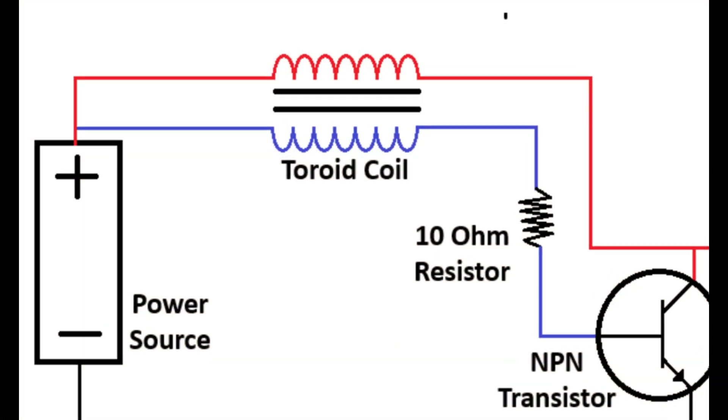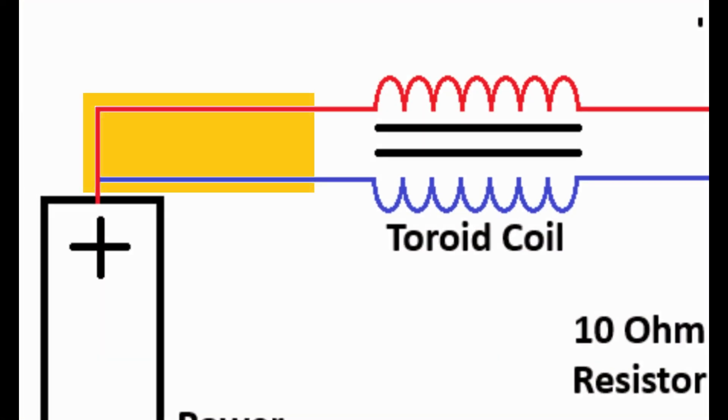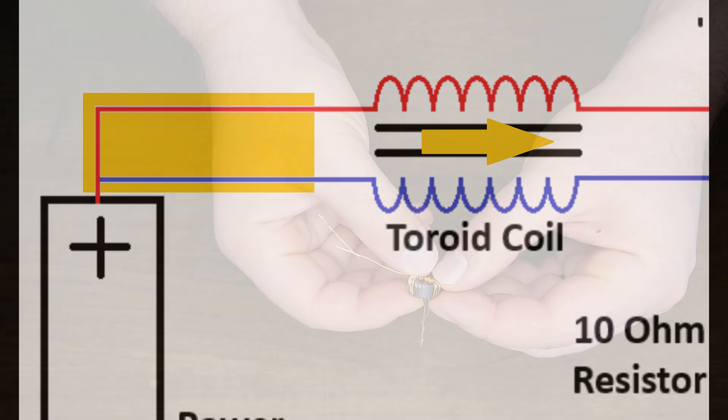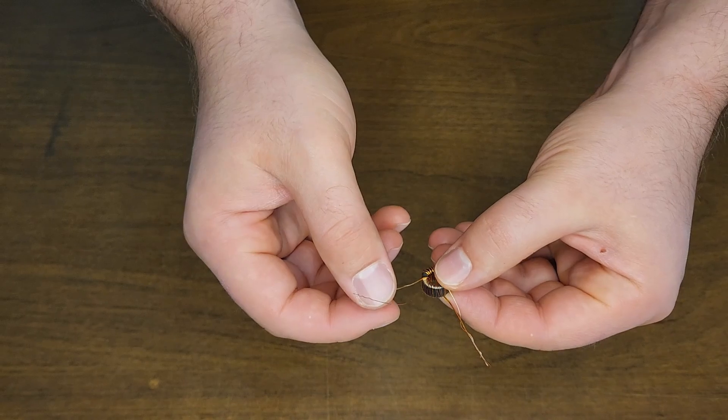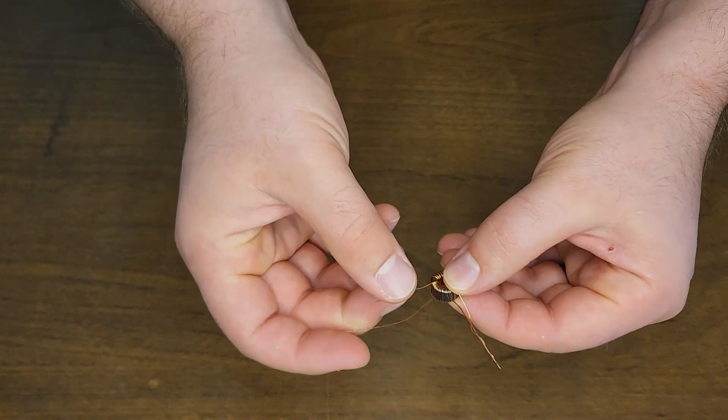Taking a look at that wiring diagram again we can see they receive power from the same source. That power travels in opposite directions around the toroid core and then exits on the other side to now separate pieces of the circuit.